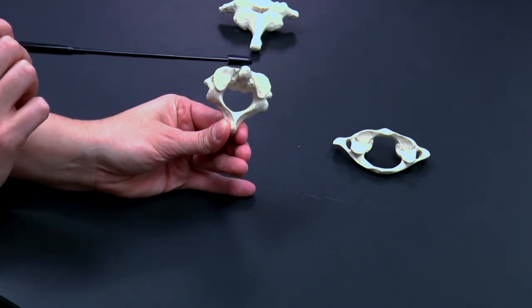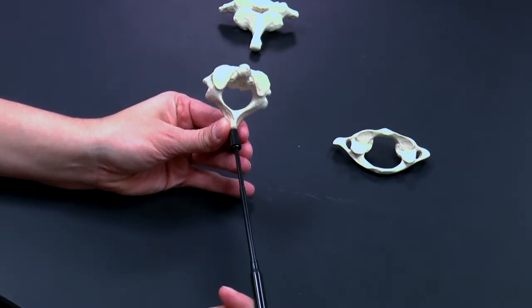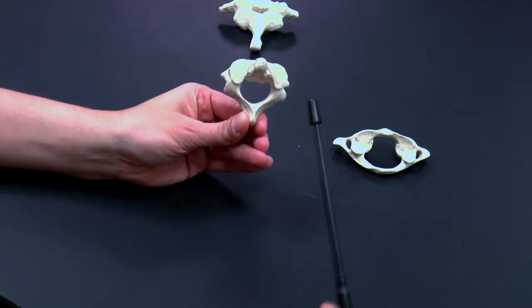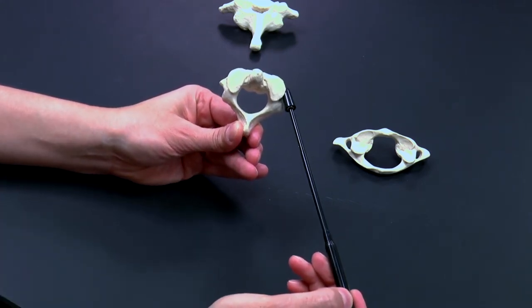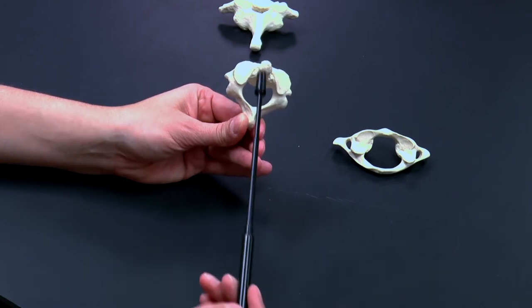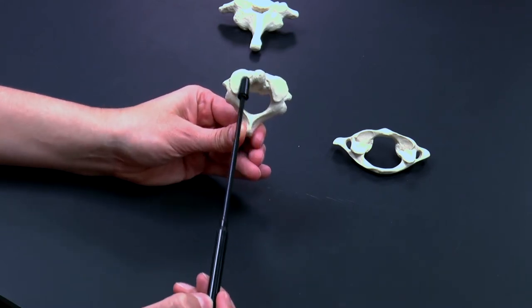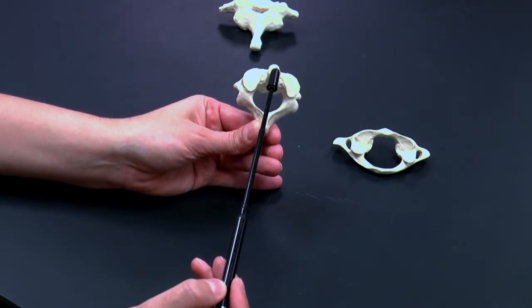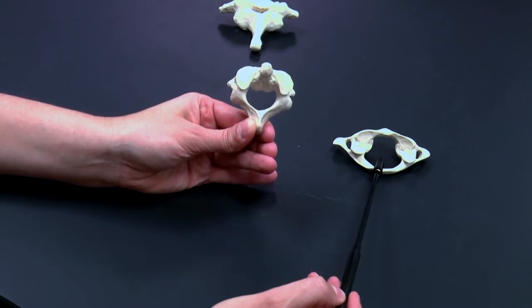So again, anterior towards the front, posterior towards the back. Again you have a small spinous process and our transverse foramina marking this as a cervical vertebrae. But you'll notice that it actually has a little protrusion coming out of the body of the vertebrae. This is called the dens. And the dens is sort of like the body of C1.